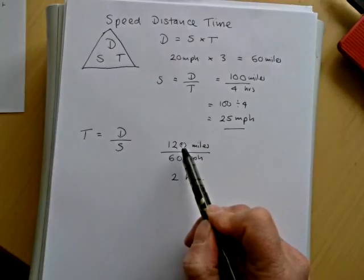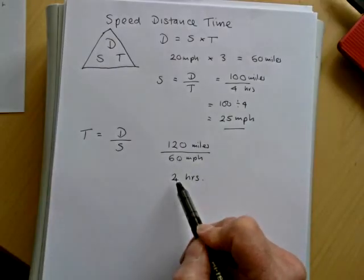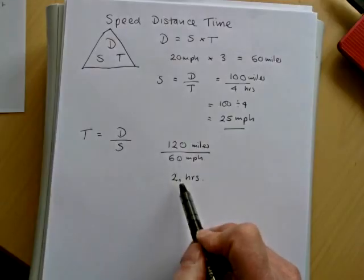And think about it, if I've travelled 120 miles, if I'm going 60 miles per hour for two hours, that would have given me the 120.